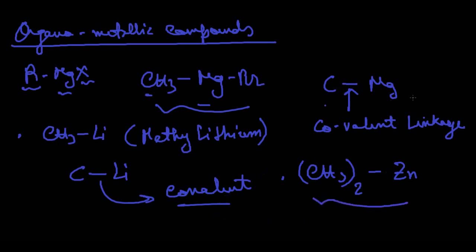The key criteria for a compound to be organometallic is that there must be a covalent linkage between the carbon atom and the metal atom. Now let's talk about metal organic compounds.